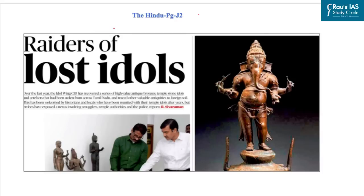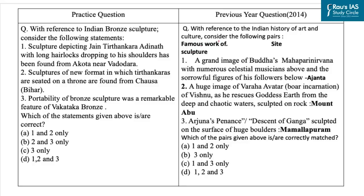Our next question is based on this article from the Hindu newspaper, related to the idol wing of the Tamil Nadu police — a unique initiative to bring back lost or stolen idols from the state. Many Chola and Pandya era idols have been brought back by this police unit. Tamil Nadu is rich in Chola and Pandya era idols worth several crores in the international market, and many are more than 1,000 years old. The key takeaway is the importance of sculpture under art and architecture.